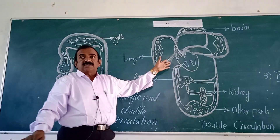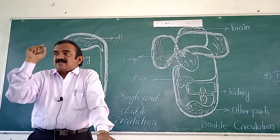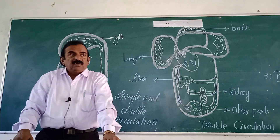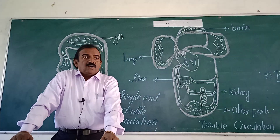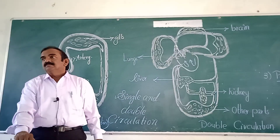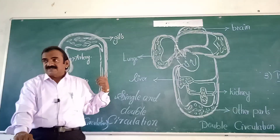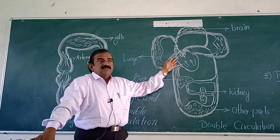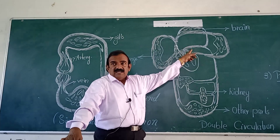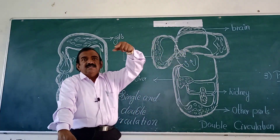Single circuit circulation is over. Give example for single circuit circulation — fish. What are the animals which are having single circuit circulation? Fish. And now I am doing double circuit circulation. Here you see: right atrium, left atrium, right ventricle, left ventricle — four chambers are there.